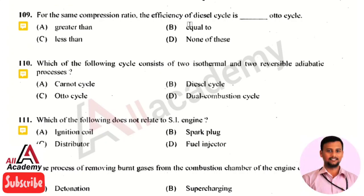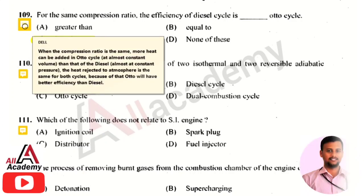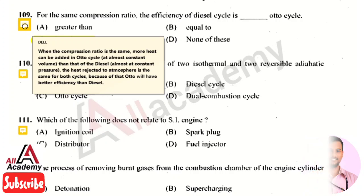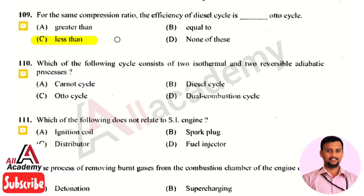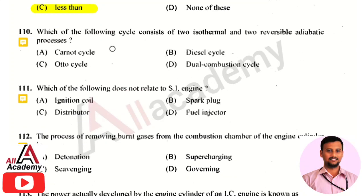For the same compression ratio, the efficiency of a diesel cycle is less than that of an Otto cycle. When the compression ratio is the same, more heat is added in an Otto cycle compared to the diesel cycle. The heat rejected to the atmosphere is the same for both cycles, so the Otto cycle has better efficiency than the diesel cycle at the same compression ratio.